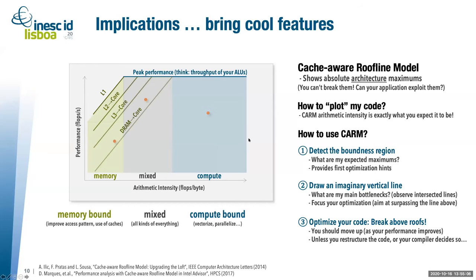We are actually all the time below the compute roof, so it suggests that we are compute-bound. There is also a mixed region where we have bandwidth slopes and the compute roof on top. By detecting the region where your application is placed, this gives you a first hint on what optimization strategy we should take.